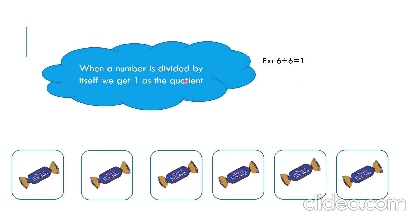When a number is divided by itself, we get 1 as the quotient. See the example here, 6 is divided by 6. That means 6 toffees are divided into 6 groups. See here, 1, 2, 3, 4, 5, 6. Each group, each box has only one toffee. That means 6 divided by 6 equal to 1.